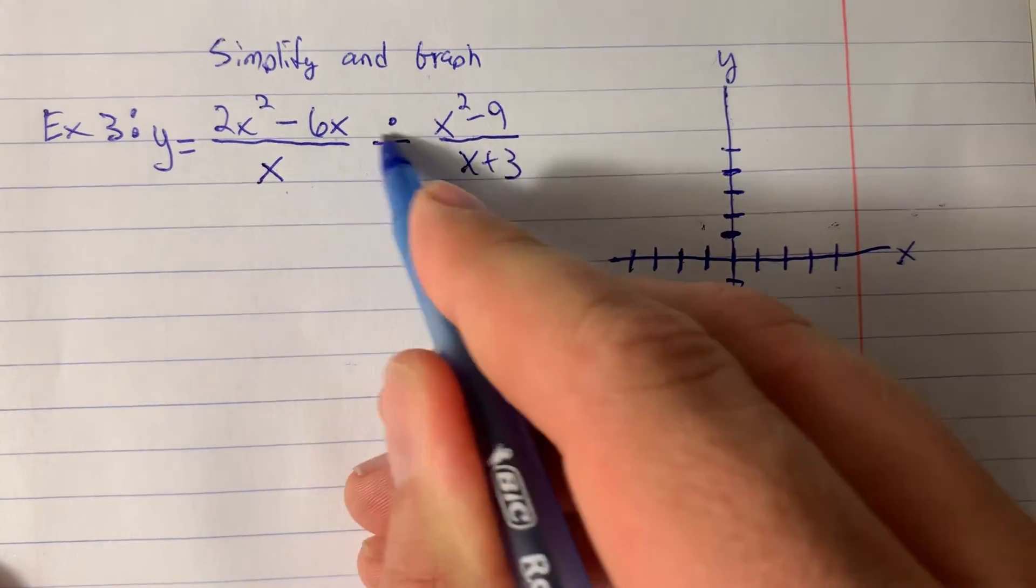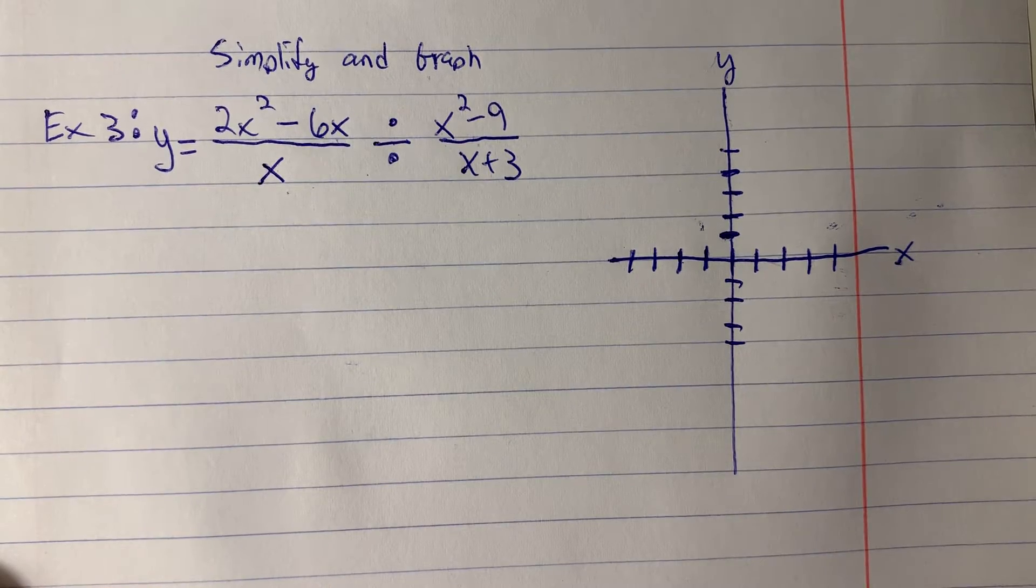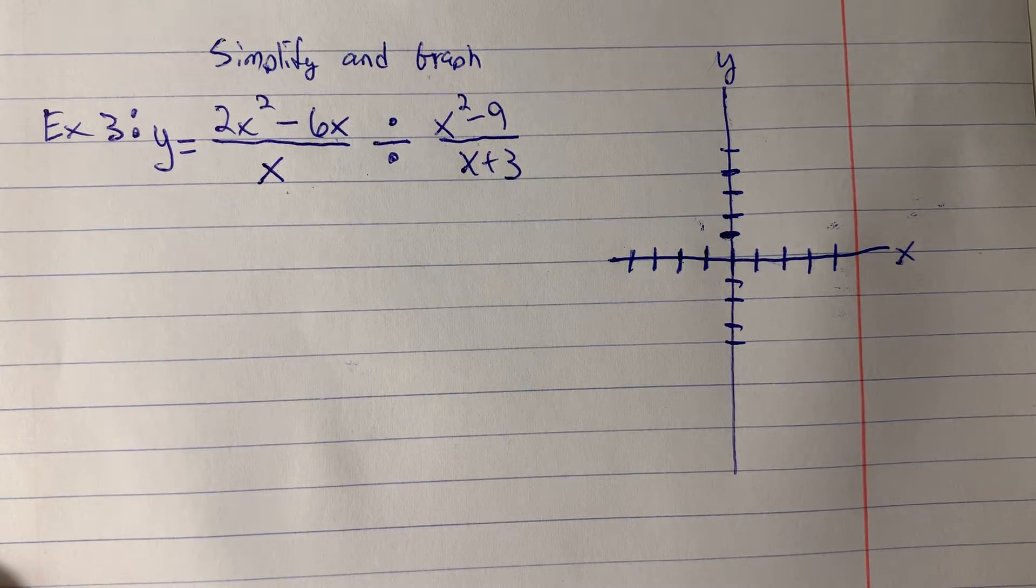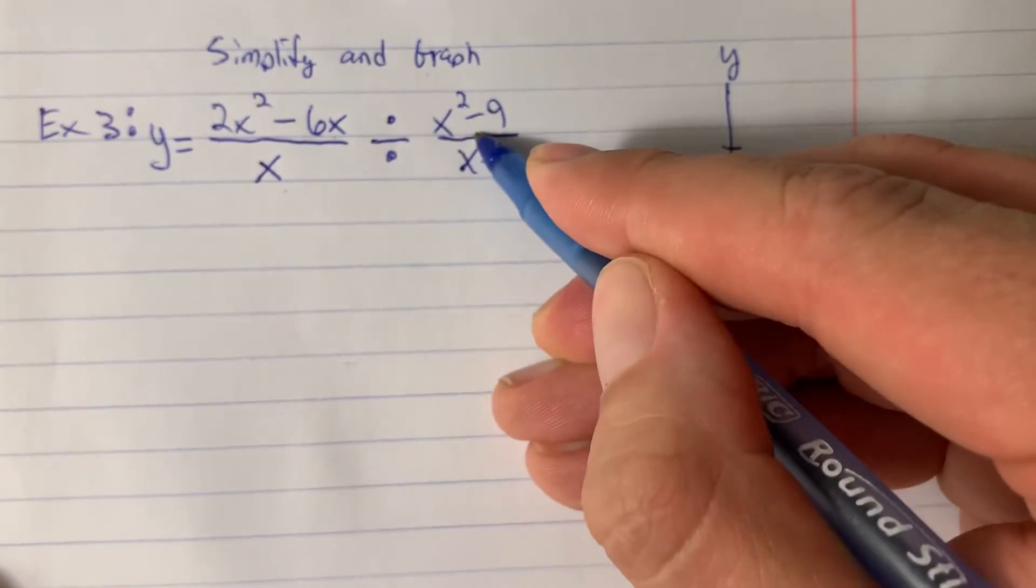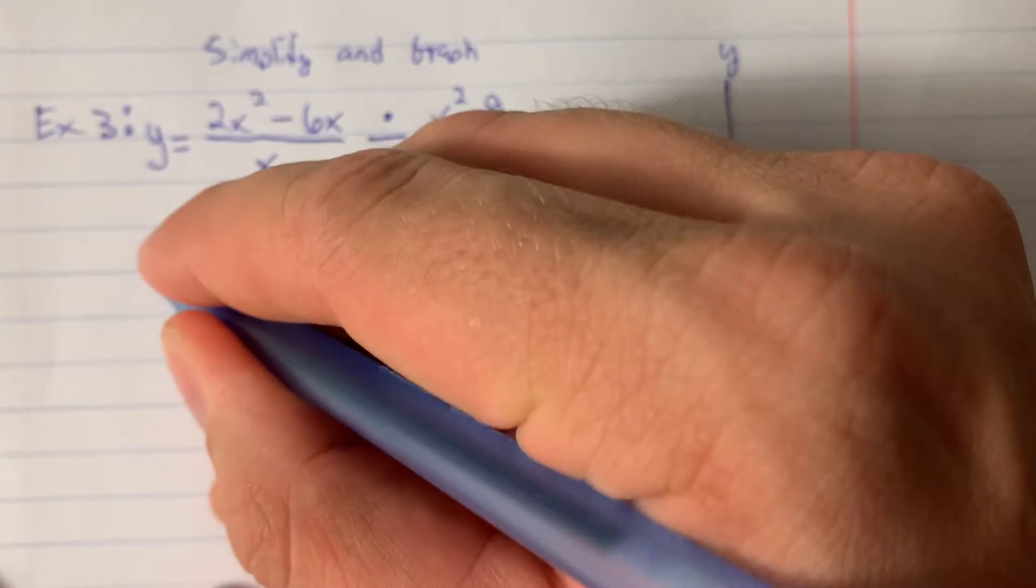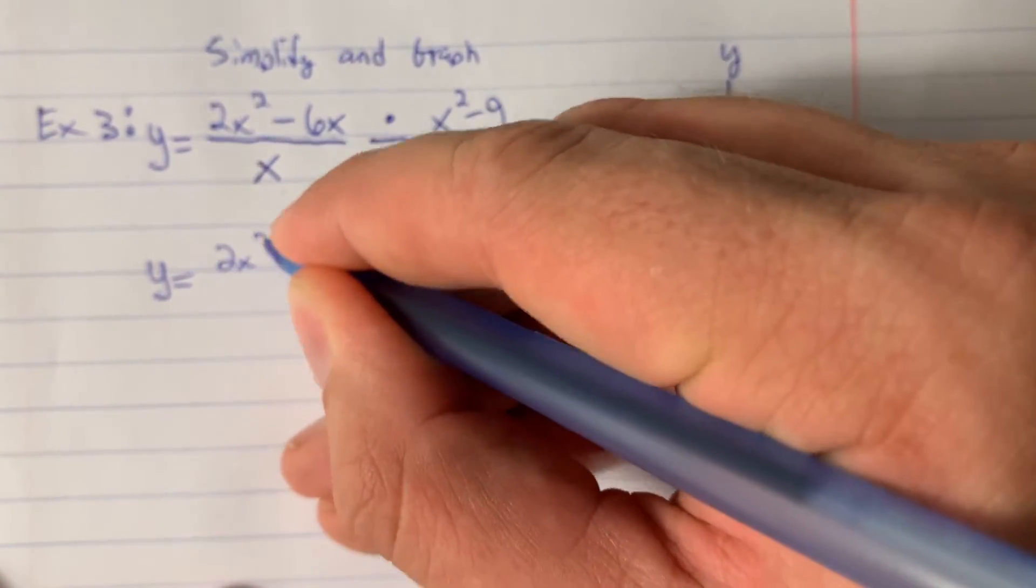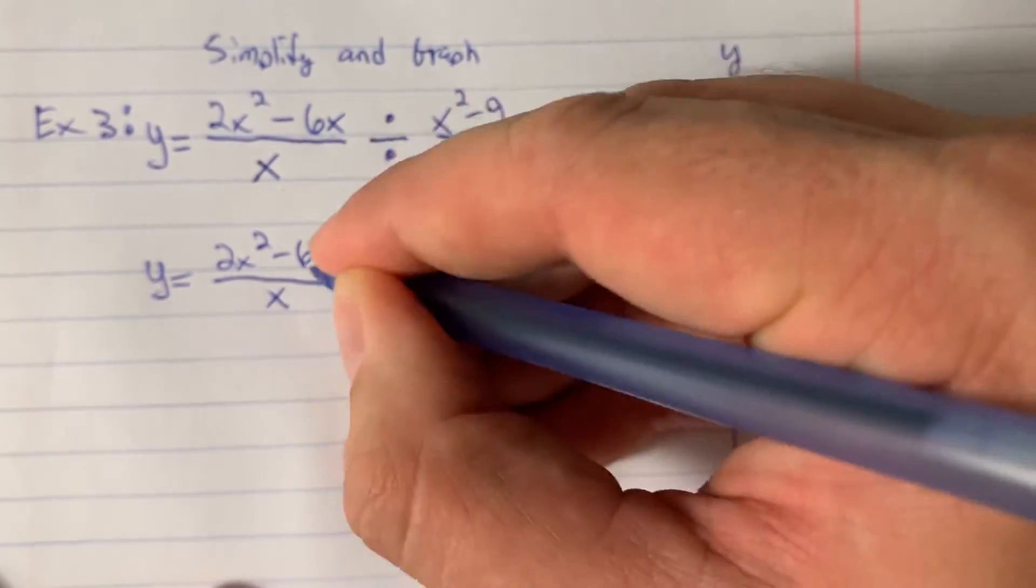So let's look at this. We have dividing two rational functions, and just like when we were dividing fractions in our warm-up, we can say that dividing a fraction is the same as multiplying by the reciprocal. So we leave the first one alone. We're going to keep our y equals. We're going to leave the first fraction, the first rational expression alone.